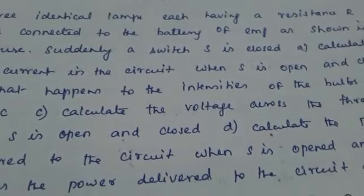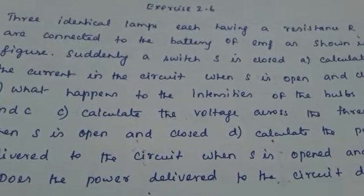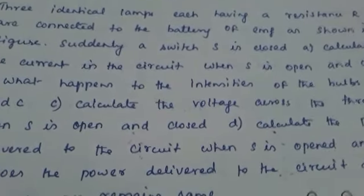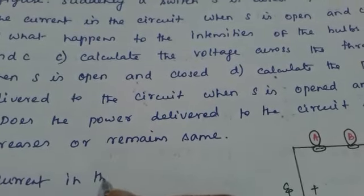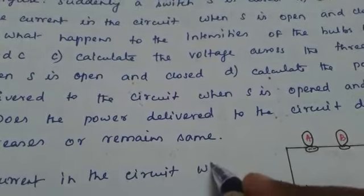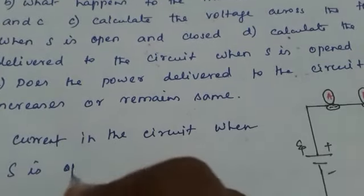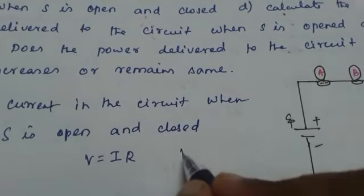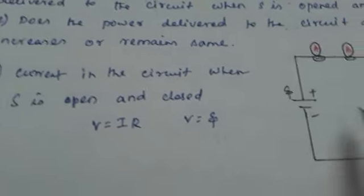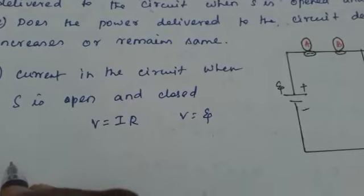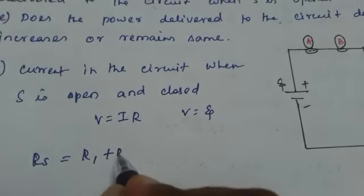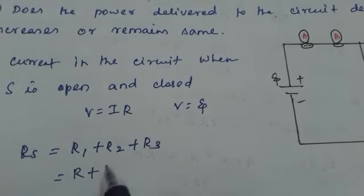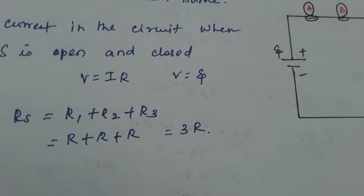We will go through these one by one. For part A, we calculate the current in the circuit when the switch is open and closed. We use the formula V = IR, where V is ψ. When the switch is open, all three bulbs are connected in series, so the total resistance is R1 + R2 + R3. Since they are identical bulbs with equal resistance, the total resistance is R + R + R = 3R.